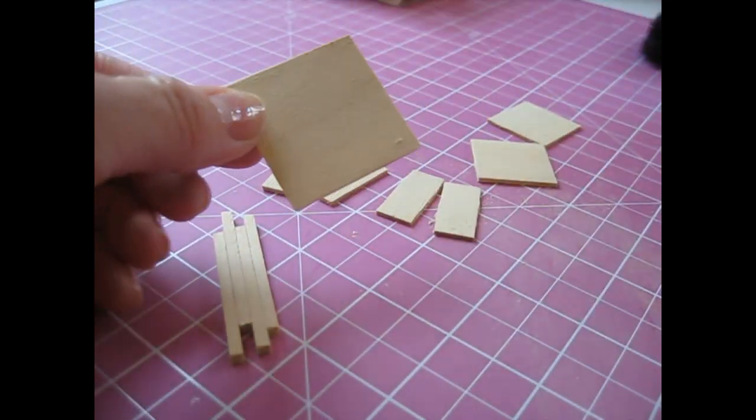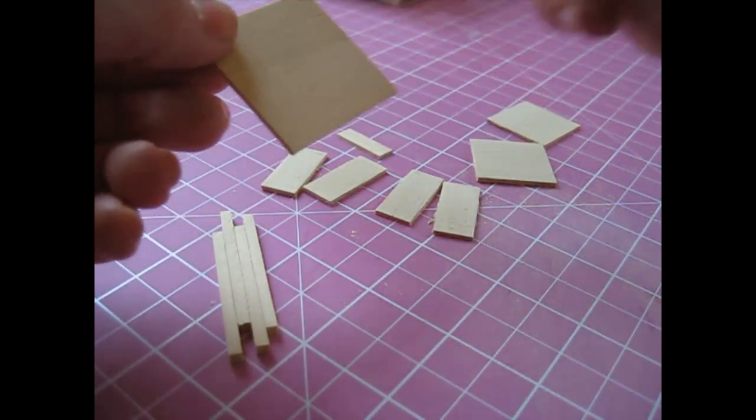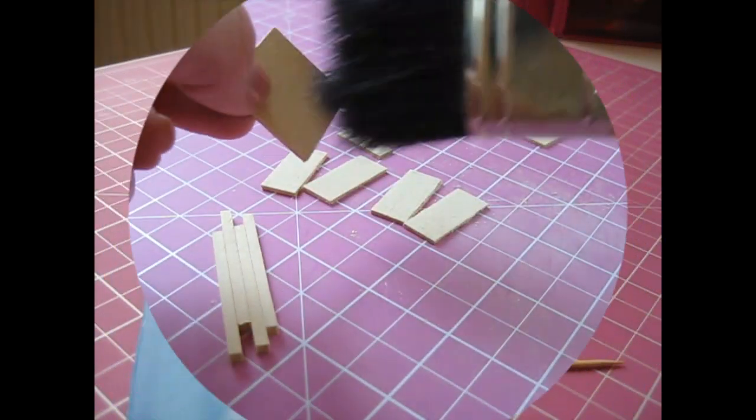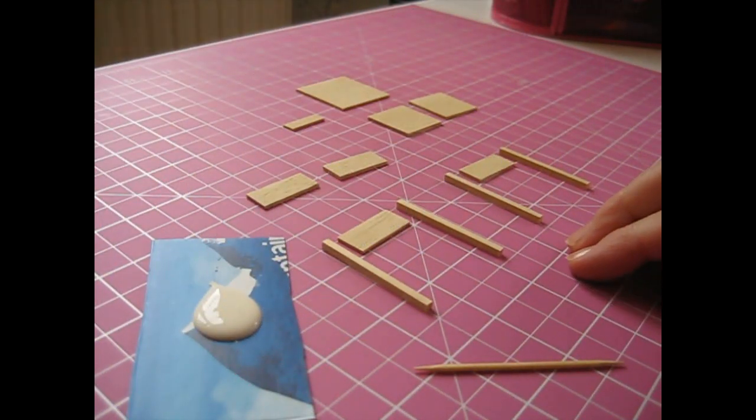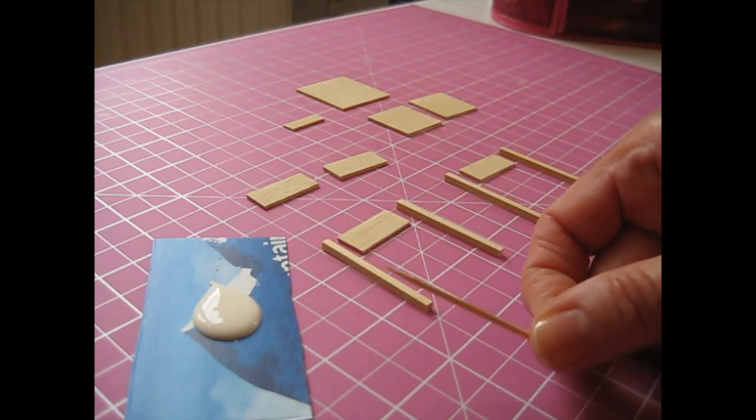Once you've sanded each piece, use a soft brush to remove the sanding dust. We're now ready to begin construction. I've dispensed some glue onto a piece of card. I'm using a cocktail stick to apply it.